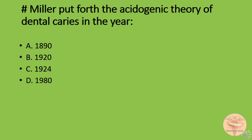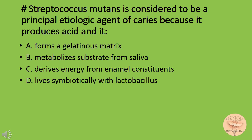Miller put forth the acidogenic theory of dental caries in the year: option A) 1890, option B) 1920, option C) 1924, or option D) 1980. The correct answer is option A: 1890. Streptococcus mutans is considered the principal etiogenic agent of caries because it produces acid and: option A) forms a gelatinous matrix, B) metabolizes substrate from saliva, C) derives energy from enamel constituents, or D) lives symbiotically with Lactobacillus. The correct answer is A: it forms a gelatinous matrix.